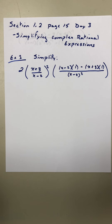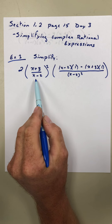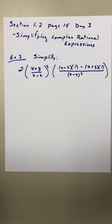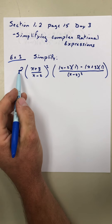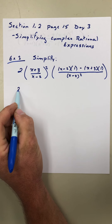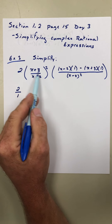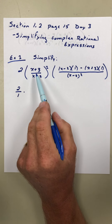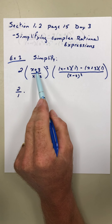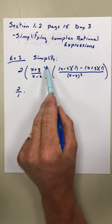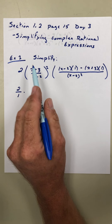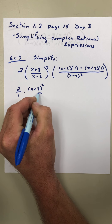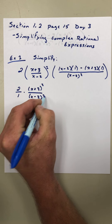In example one, we have two times this big quantity x plus three over x minus two, squared times this quantity. I'm going to rewrite two as a fraction, two over one, because this is two times this fraction times this fraction. When we have a quantity to an exponent, we can take the numerator and denominator both to that same exponent. So we can write this as the quantity of x plus three squared over x minus two squared.